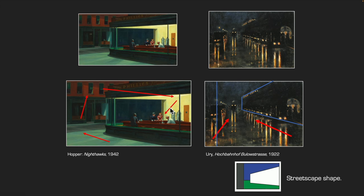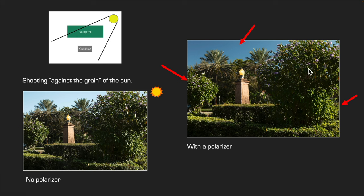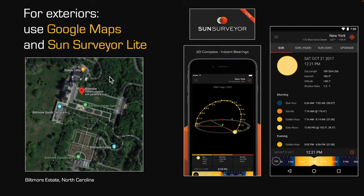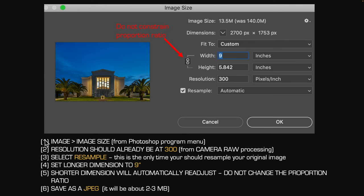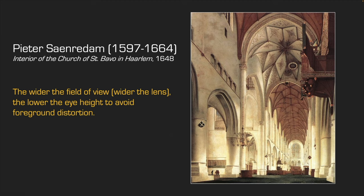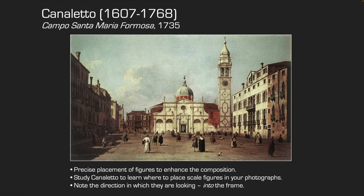You'll learn the rules of composition and proportion, basic equipment, techniques for photographing all kinds of subjects at all times of the year, color in black and white photography, and detailed digital file processing. Plus, you'll learn how the history of architectural depiction applies to today's digital world.